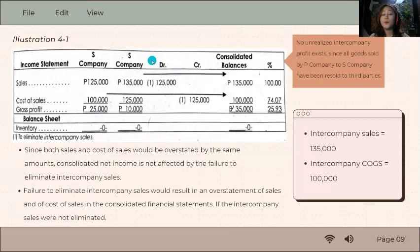But regardless, we still need to discuss this since we have an eliminating entry of 125,000 to remove the sales and cost of goods sold. You can see here the sales and cost of goods sold are the same amount. Net income is not affected regardless if you do this or not.